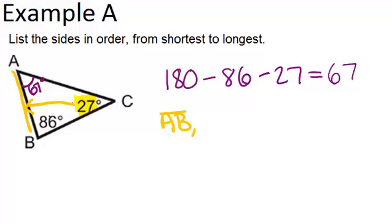After that, we can go to the medium length side, which would be across from the middle angle of the three, which is the 67. So, across from the 67 will be the medium length side, which is BC. Then, the longest side is across from the biggest angle of 86, and that would be AC.